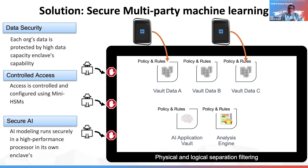So they can manage their own rules. Data from company A can have its rules, data from company B can have its rules, data from company C can have its rules, and these rules protect their own data and can be set independently.